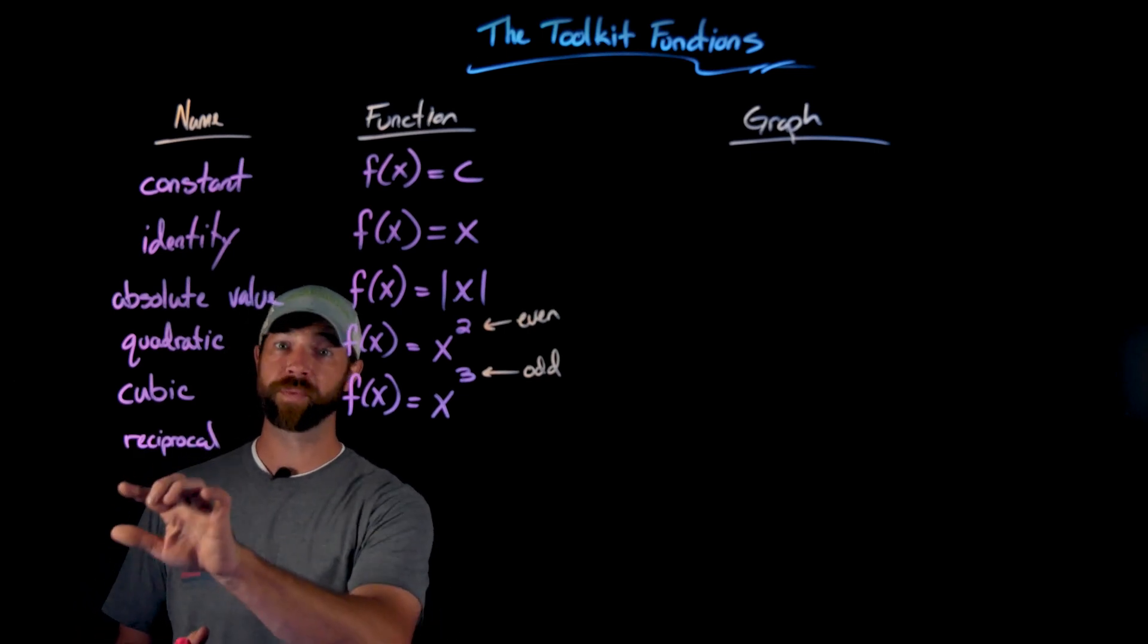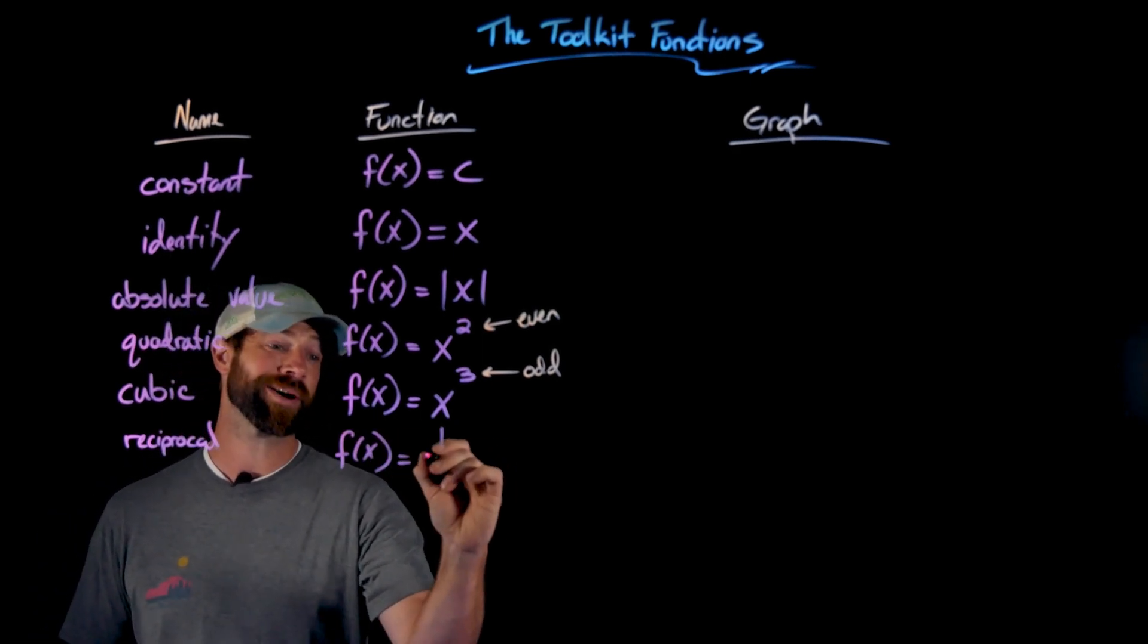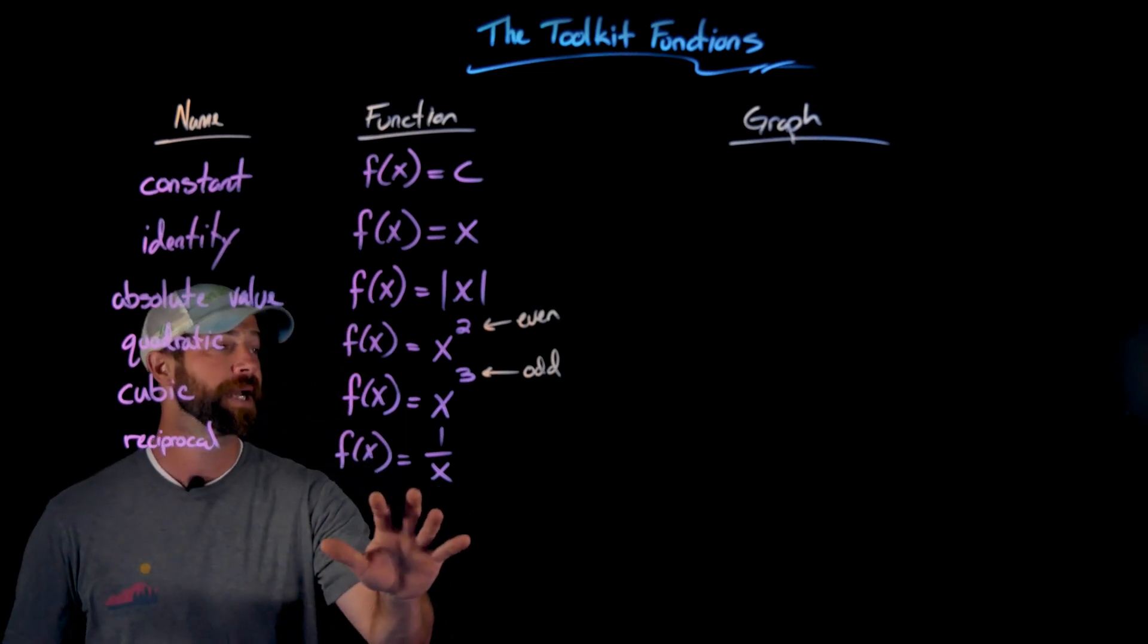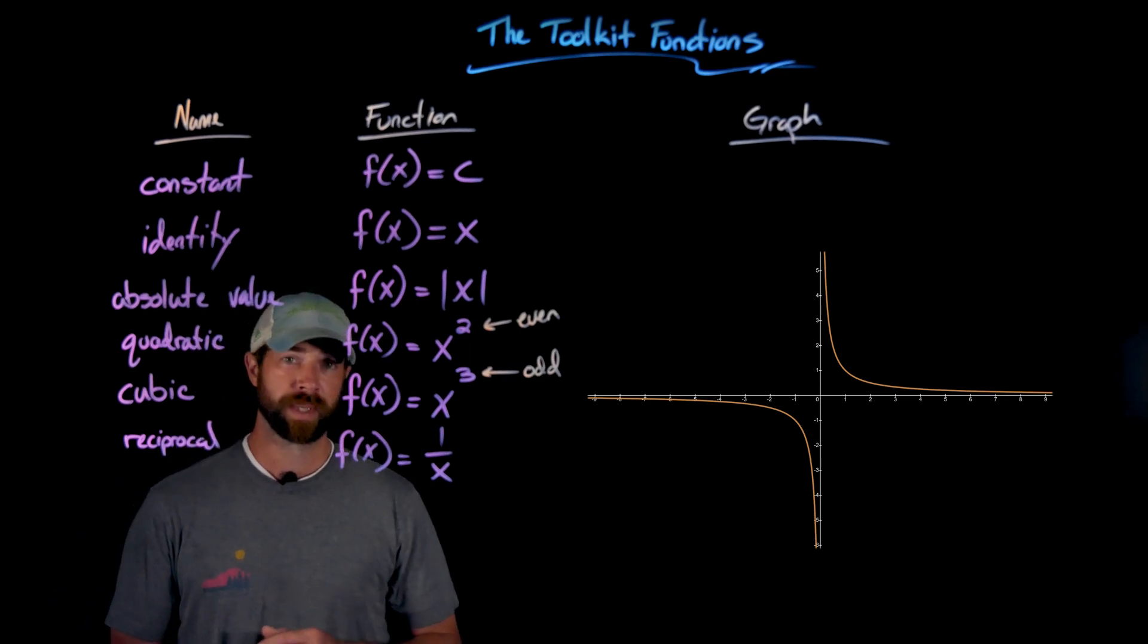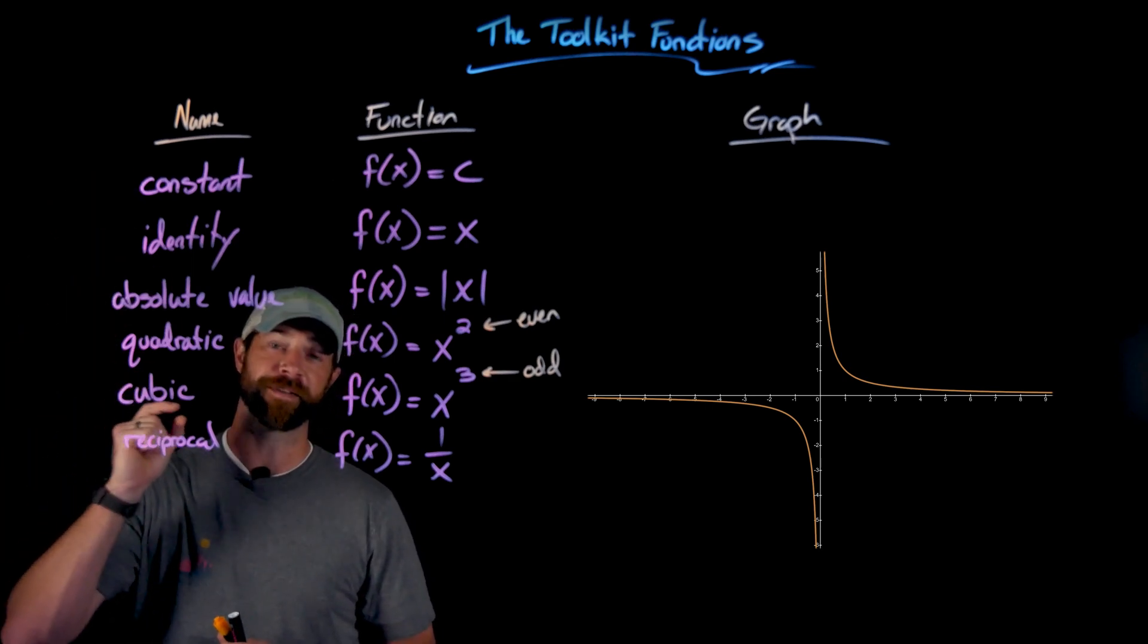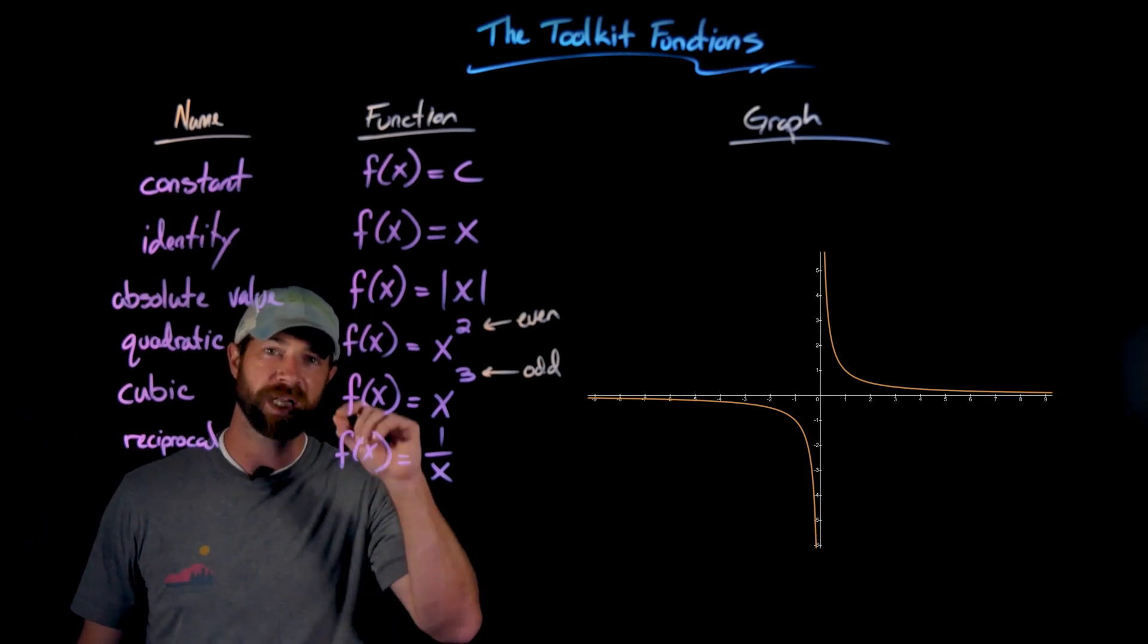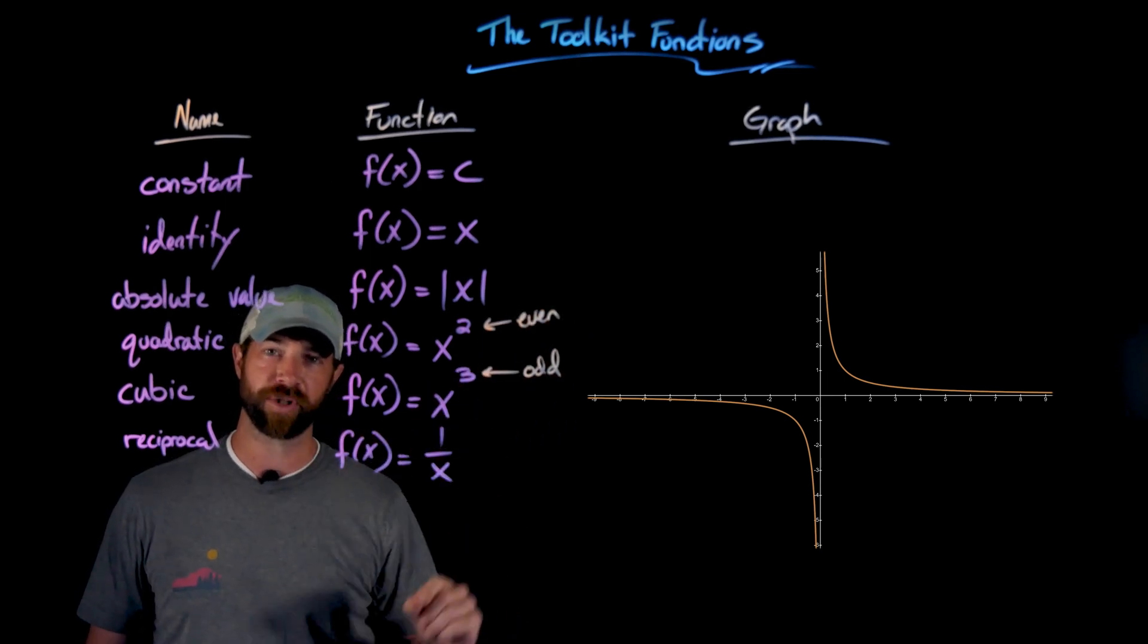Next we have the reciprocal function. The reciprocal function is f(x) equals 1 over x, and this is our first rational function. These will be really important to us in pre-calculus as we analyze different aspects of graphs. Here is the graphical representation of f(x) equals 1 over x. Some important attributes about these rational functions: these first functions we talked about were all continuous, which simply means that if you put your pen on one part of the graph, you can go to any part tracing along the graph.